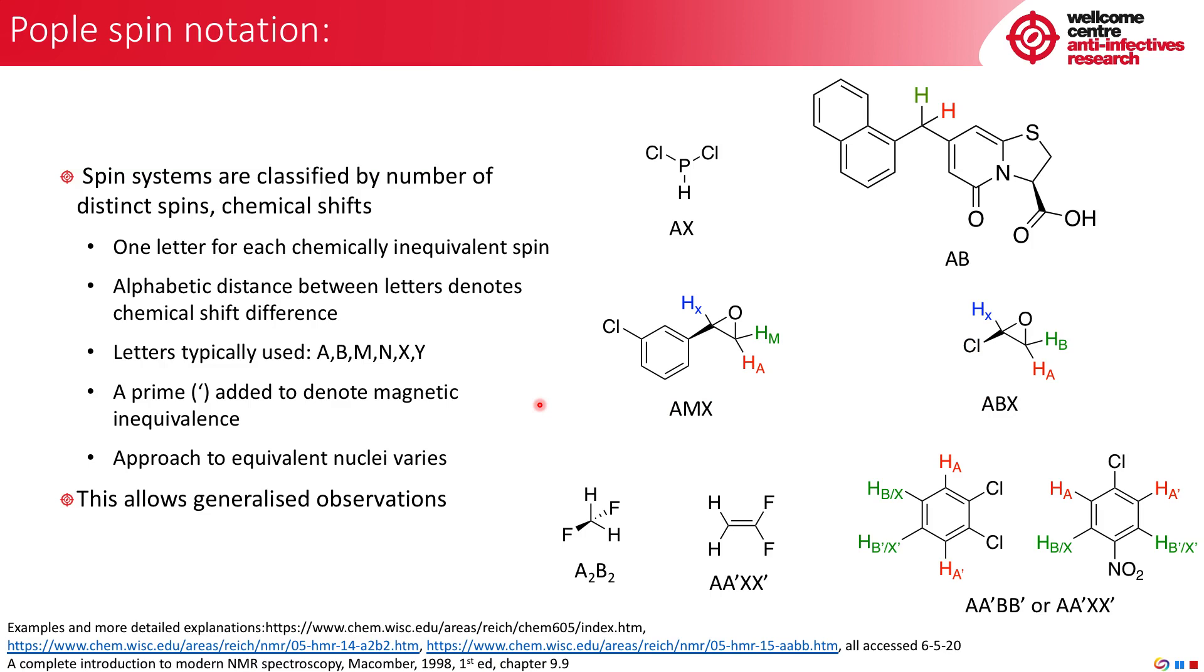In addition to the lettering based on chemical shift, we also add primes to denote magnetic equivalence. So here we have a system, a difluoromethane system. The hydrogen atoms are always equivalent to one another. And the Fs, B and B, are always equivalent to one another. You could call this A2X2 if you preferred.